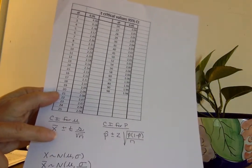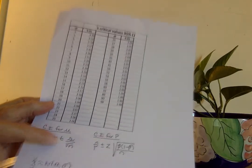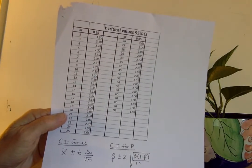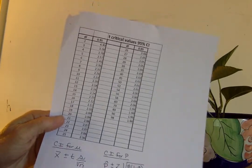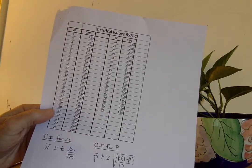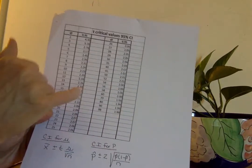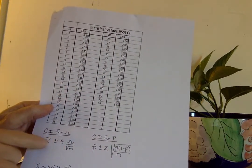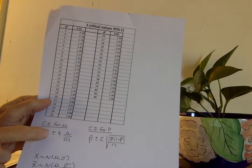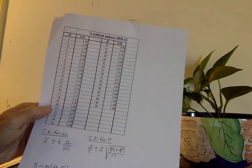We are only doing 95% confidence intervals. When you have to set up the formula, to look for that t value, you're going to use this much easier chart. The chart used in the previous video was for Math 220 and is a little more complicated. These are all 95% confidence intervals. Degrees of freedom is n-1, so you look it up that way. That number is just for when you have to show me the setup — you'll go to your calculator, the t interval, and you'll never even have to put that number into the calculator.